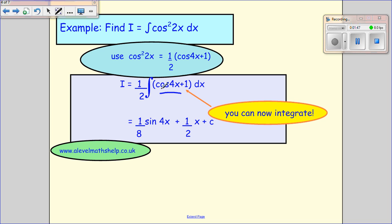So cos 4x integrates to quarter sine 4x. Because it's a constant times x, you divide by the constant. Cos comes from sine with no change of sign. So the quarter times 2 gives you the 8. And then the 1 integrates to x, giving you half x, and then plus c.